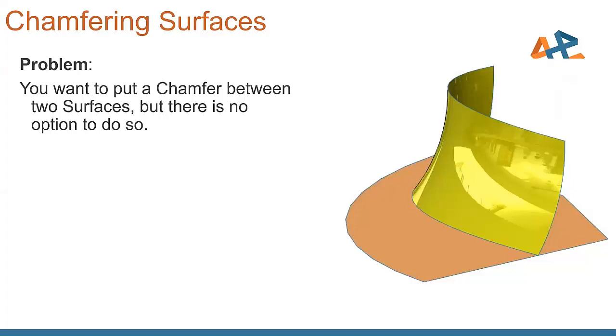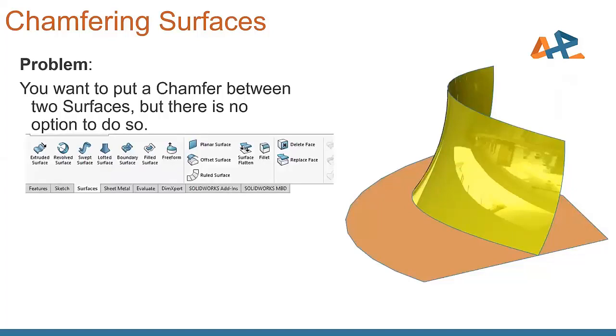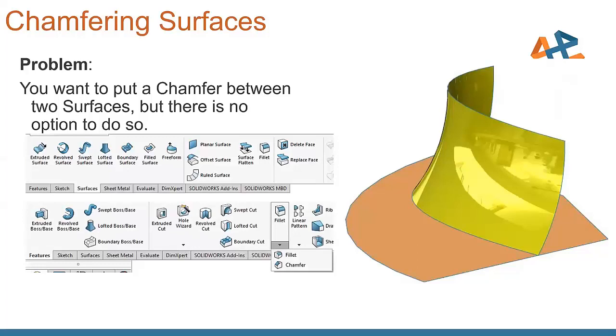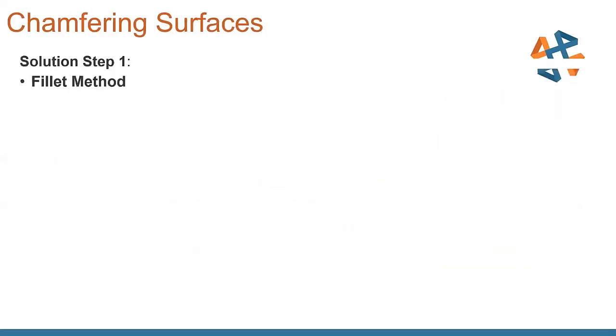Moving on, chamfering surfaces. We want to put a chamfer between two surfaces, but there is no option to do so. If we look at the surfaces toolbar here, you will see there is a fillet option in here. If you look at your standard features toolbar, there is a fillet with a drop-down option that gives you fillet or chamfer. So we can't create a chamfer at the surface level here. So what do we do to work our way around this one?